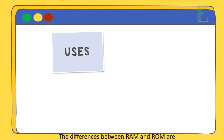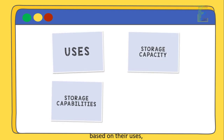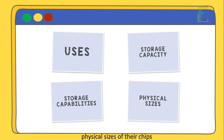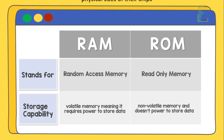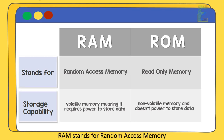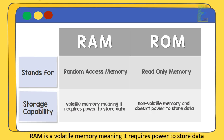The differences between RAM and ROM are based on their uses, storage capabilities, capacity, and physical sizes of their chips. Look at this table where I summarized the differences between RAM and ROM. RAM stands for Random Access Memory while ROM stands for Read Only Memory.